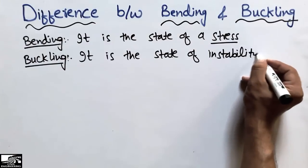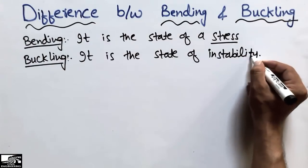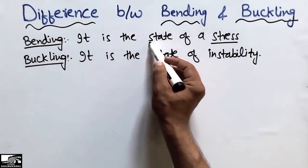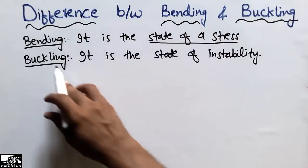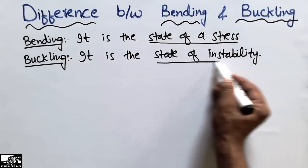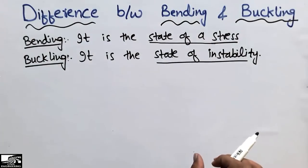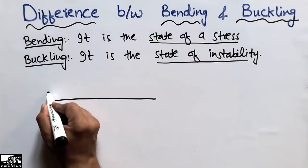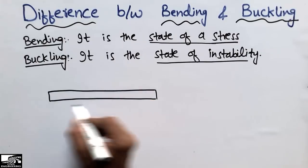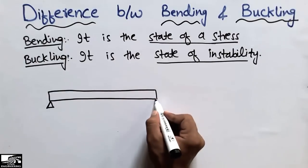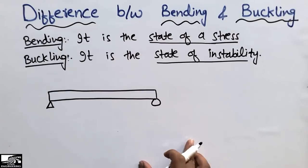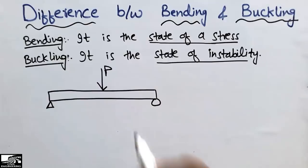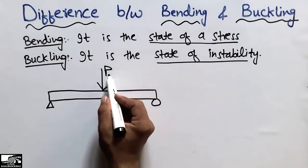So bending is related to the state of stress in a member, while buckling is related to the state of instability in a structural member. For example, consider a beam here — this is the front view of this beam, supported by a hinge and roller support at the two ends. When a concentrated load acts on this beam —